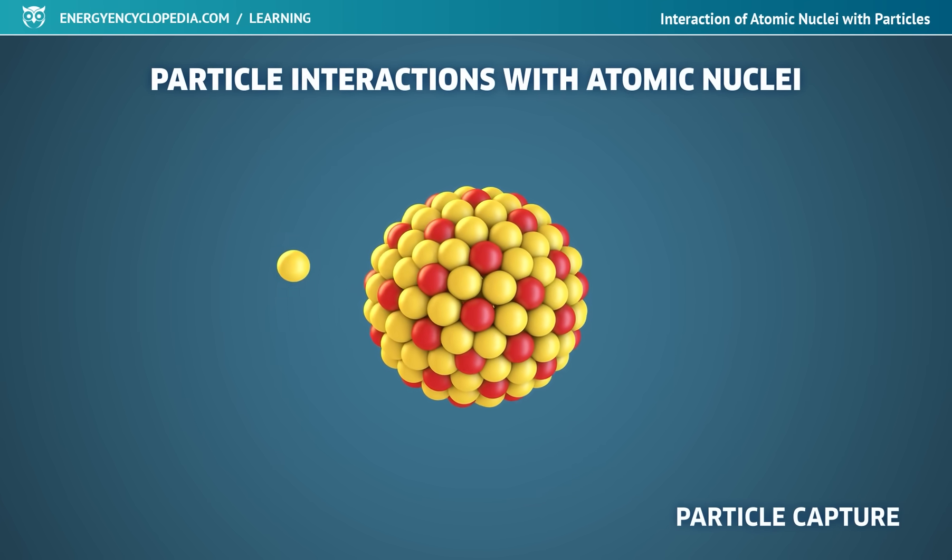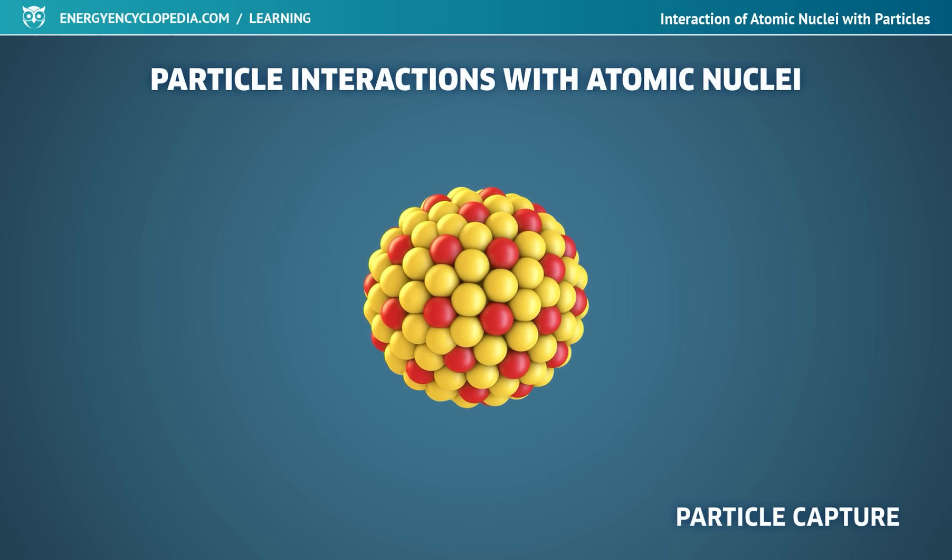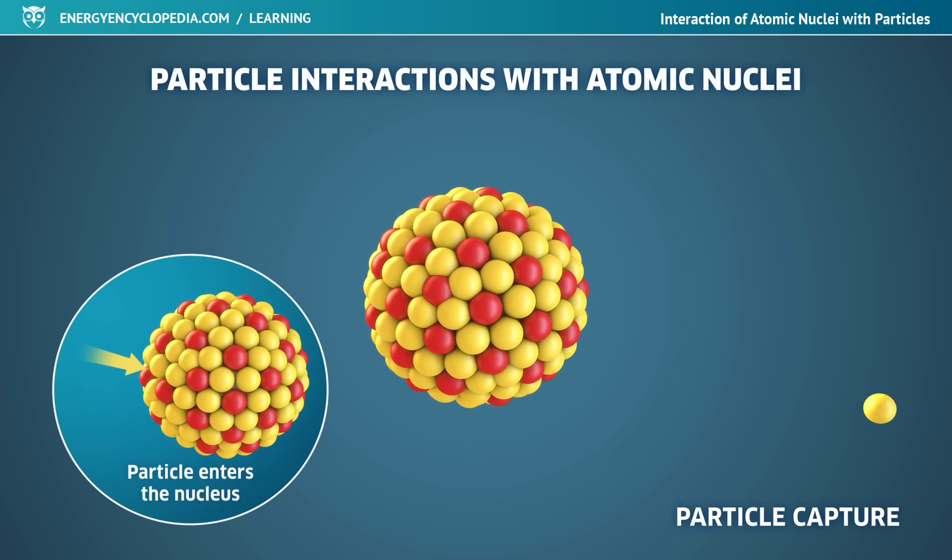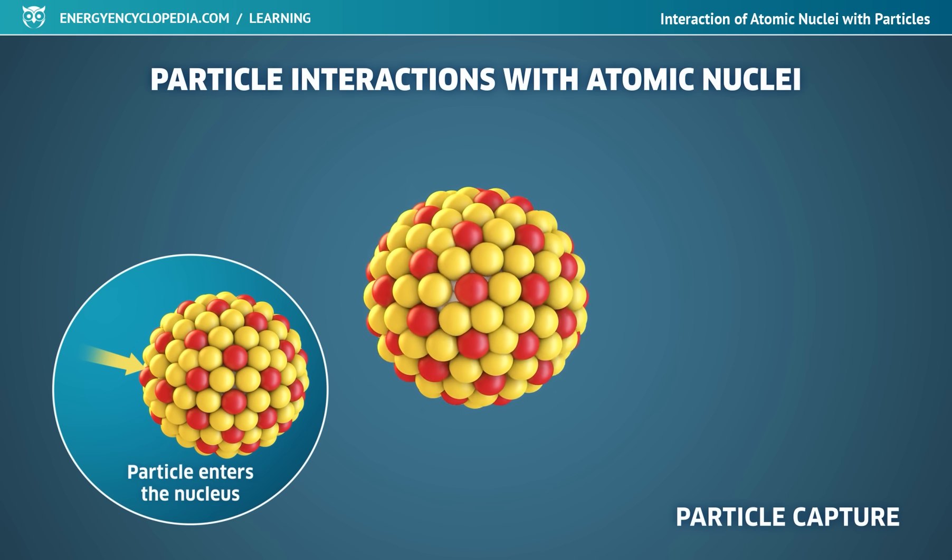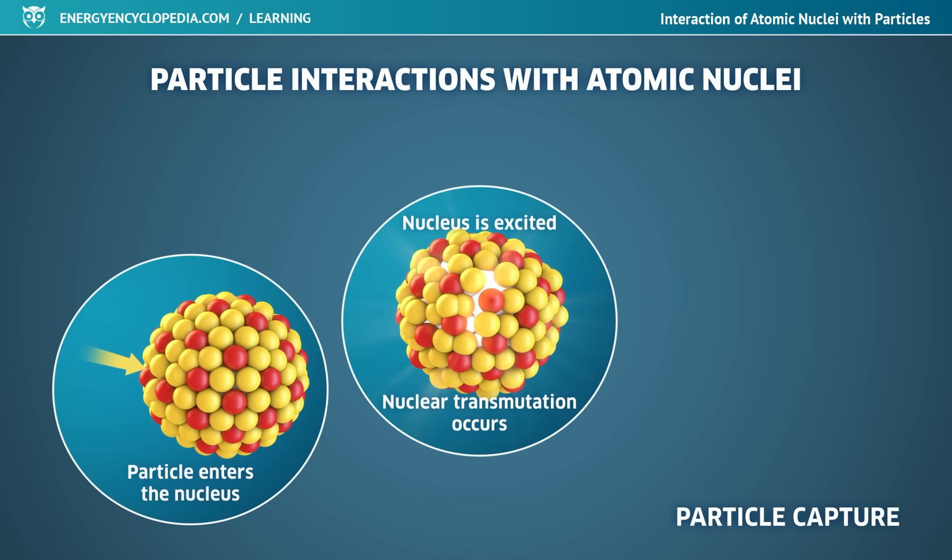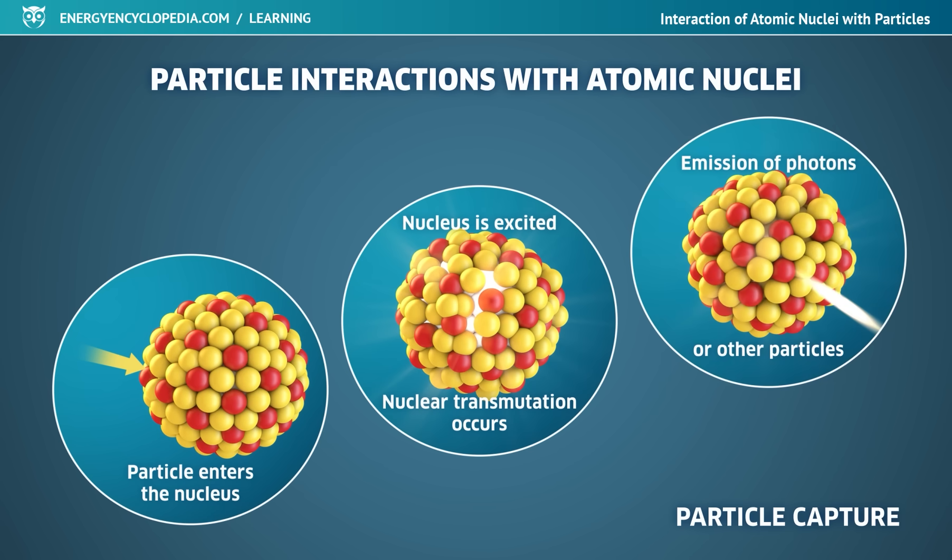The last way of interaction is the capture of the particle by the nucleus. The particle enters the nucleus, creates a compound nucleus and transfers all its energy to it. In the nucleus, there is an excitation and the change of the number of nucleons, nuclear transmutation. The release of excess energy is accompanied by the emission of photons and other particles.